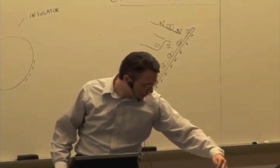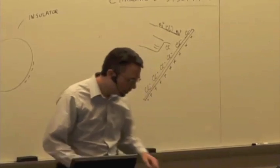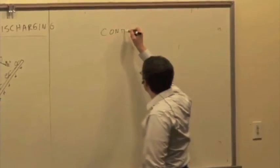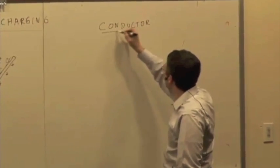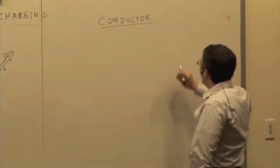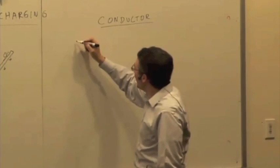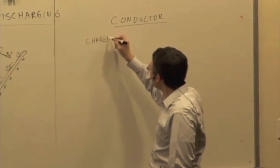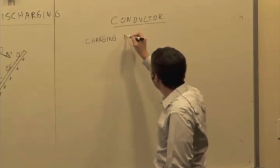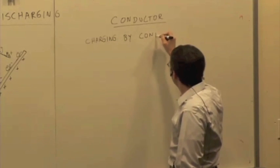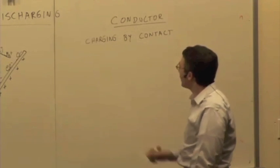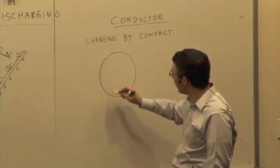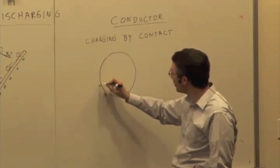What about a conductor? Let's say we have a conductor. And we can charge and discharge by contact. So let's talk about charging by contact. And let's say I have some conducting object, some piece of metal or something that already has a charge on it. It's a positive charge.